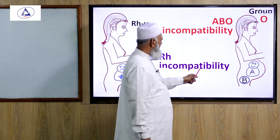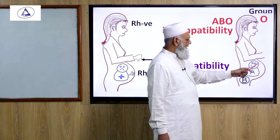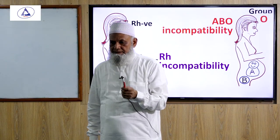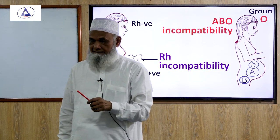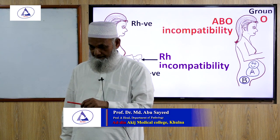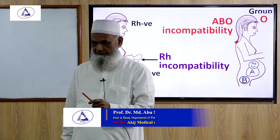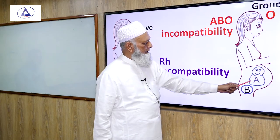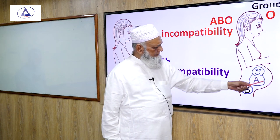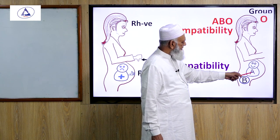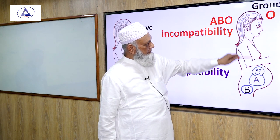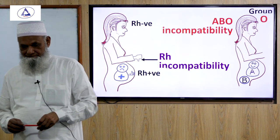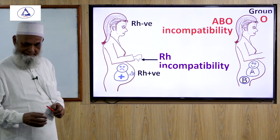ABO incompatibility occurs when the mother is blood group O and the fetus is blood group A or B. Group O blood contains IgG antibody against A and B antigens, whereas the rest of the ABO blood group system contains IgM antibody. In the case of a maternal O and fetal A combination, fetal A antigen entering the maternal circulation will encounter these IgG anti-A antibodies.